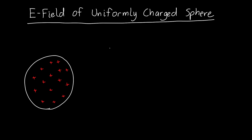In this video we're going to learn how to find the electric field of a uniformly charged sphere. We have a sphere with radius R and a uniform charge density rho, where rho is the charge per unit volume and is a constant. Let's say it's positive rho.